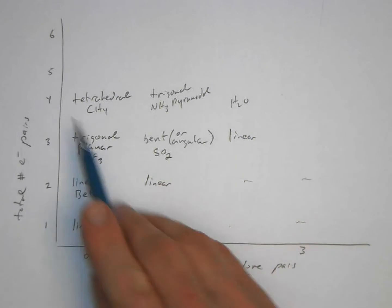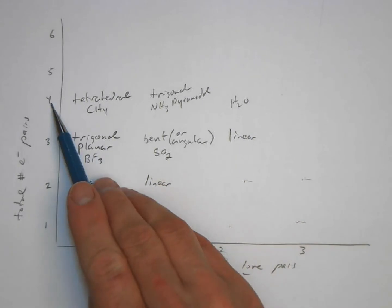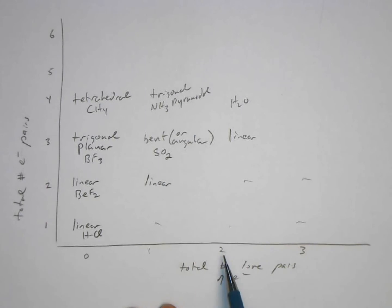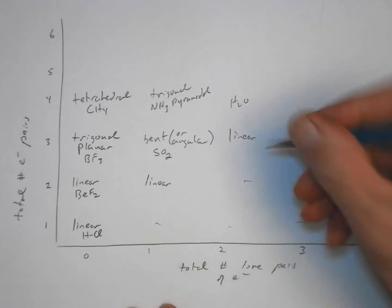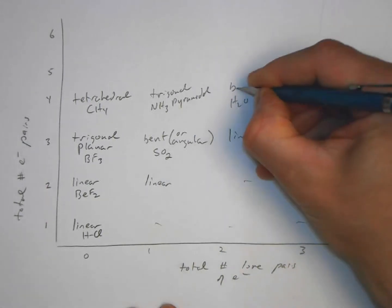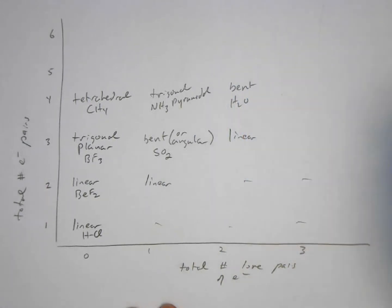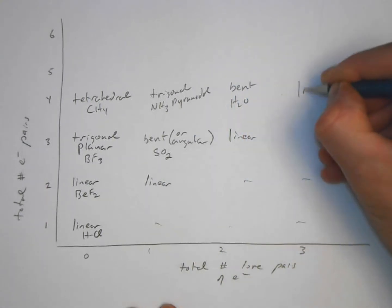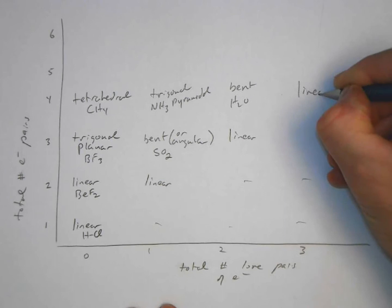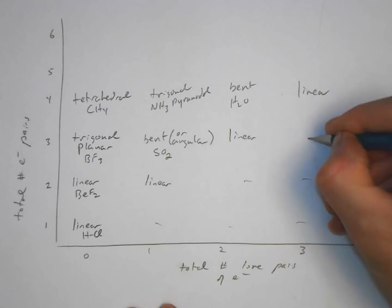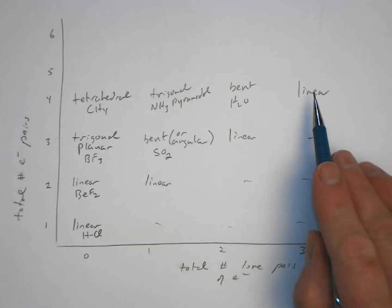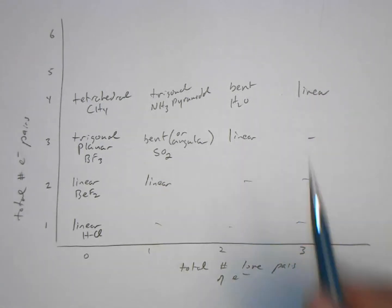Water has four pairs of electrons around the central oxygen, but two of them are lone pairs. We saw that was a bent geometry. And finally, with four pairs and three lone pairs, we have a linear geometry, though I can't think of an example of a molecule that does that.